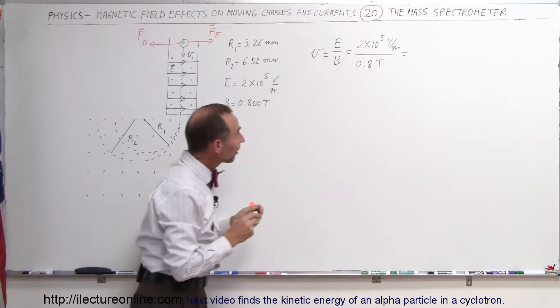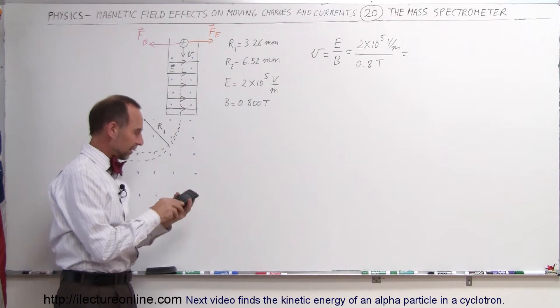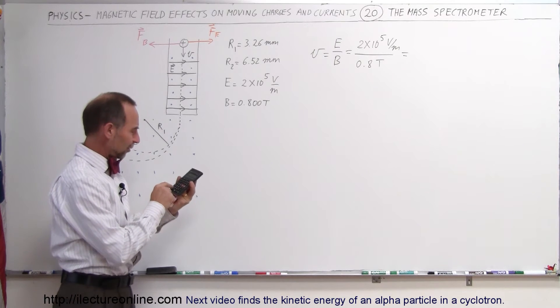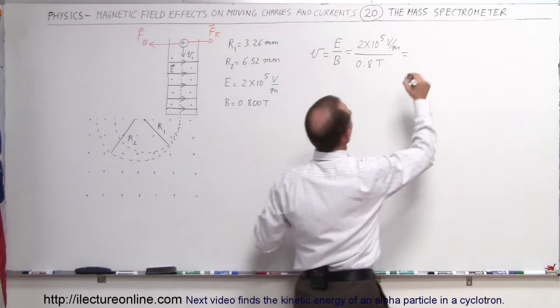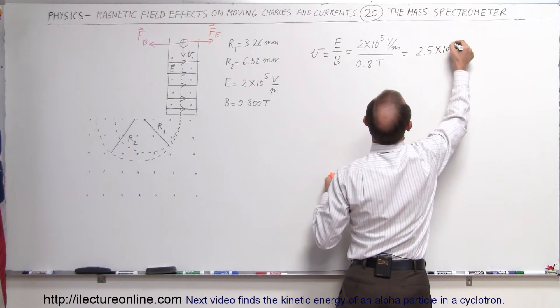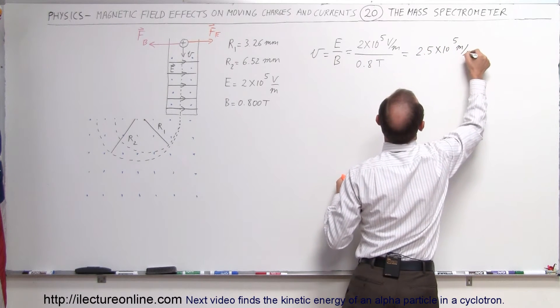Let's see, 2 times 10 to the 5, that's 2.5, 2 divided by 0.8, yes, that's 2.5 times 10 to the fifth meters per second.